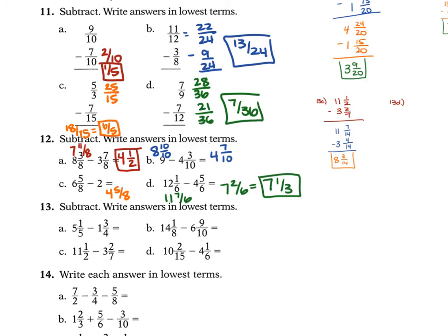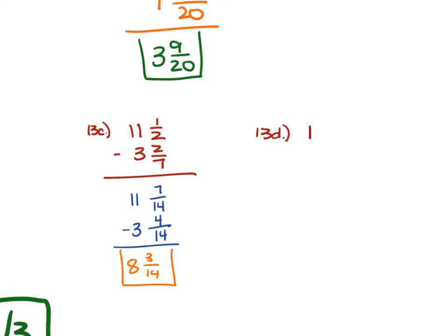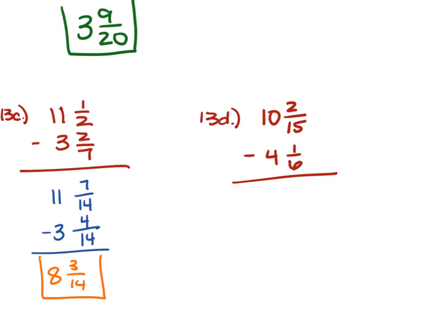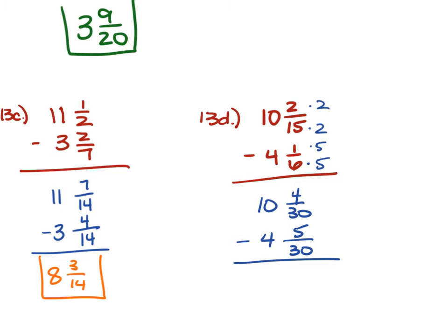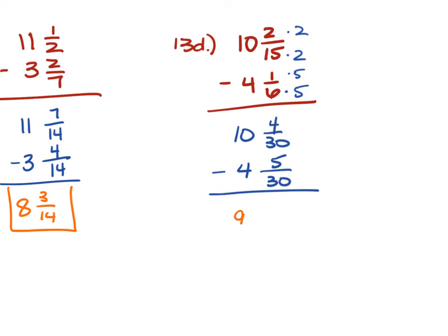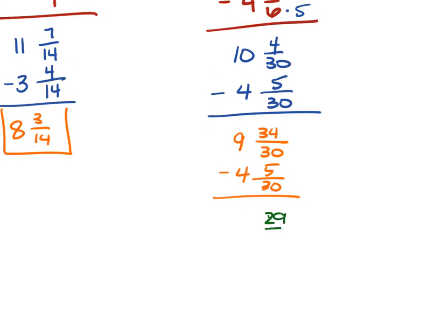For 13D, 10 and 2 fifteenths minus 4 and 1 sixth: LCD is 30, converting to 10 and 4 over 30 minus 4 and 5 over 30. Since 5 is greater than 4, regroup the 10 to 9 and 34 over 30. Then 9 minus 4 is 5, and 34 minus 5 is 29 over 30 — answer is 5 and 29 over 30.